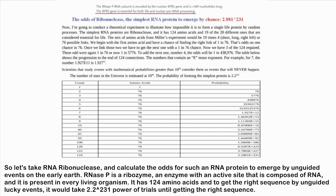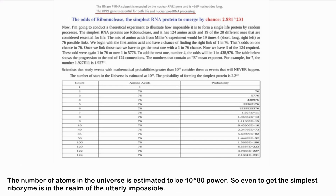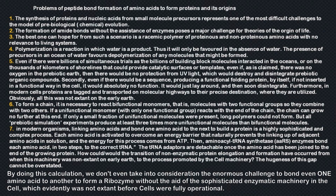The only alternative, if God is excluded, is an orderly aggregation in a sequentially correct manner of the basic building blocks of life without external direction — in other words, pure luck and chance giving order. So let's take RNA-ase P and calculate the odds for such an RNA protein to emerge by unguided events on the early Earth. RNA-ase P is a ribozyme with an active site composed of RNA, present in every living organism. It has 124 amino acids, and to get the right sequence by unguided lucky events would take 2.2 to the 231st power of trials. The number of atoms in the universe is estimated to be 10 to the 80th power — so even getting the simplest ribozyme is in the realm of the utterly impossible.